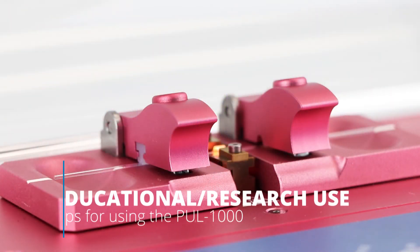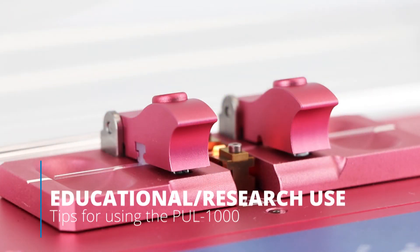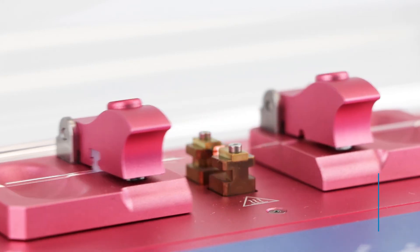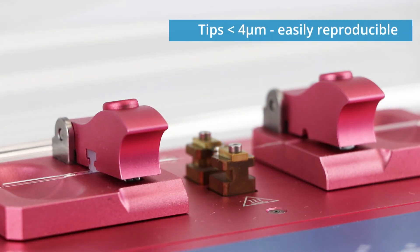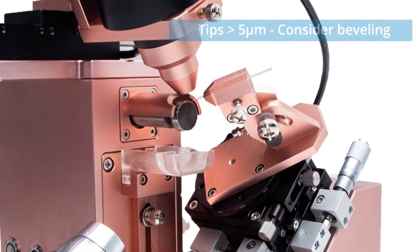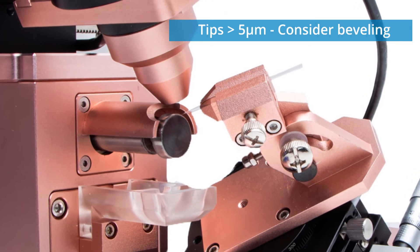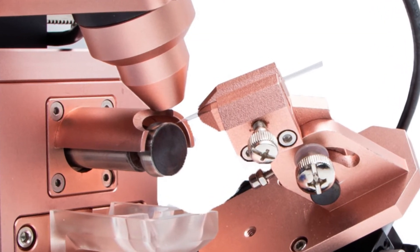This puller is for educational and research purposes. It's not really a production puller. Pulling tips less than four microns is easily reproducible. For consistent tip diameter greater than five microns, use a second pulling operation like beveling.